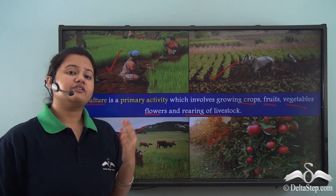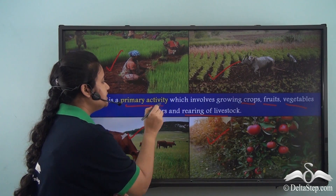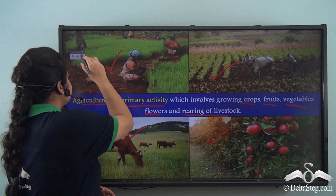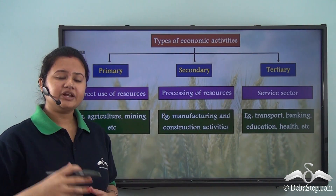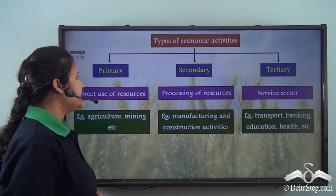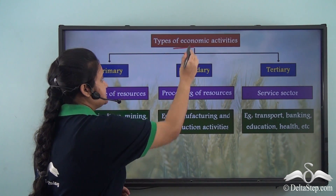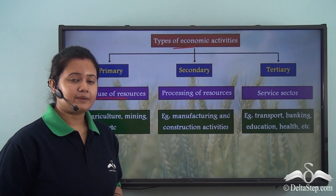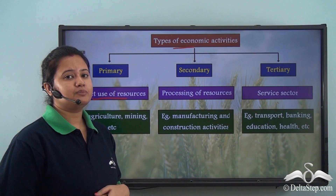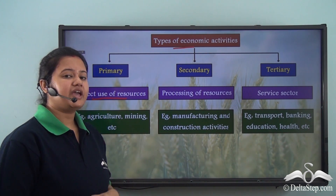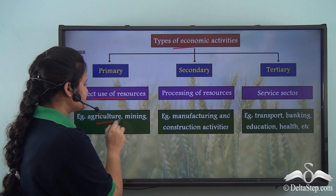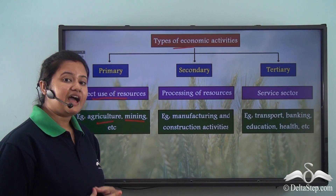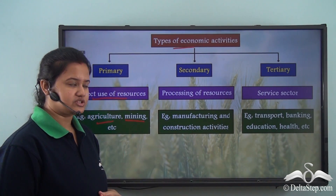Agriculture is a primary activity. A primary activity is an economic activity that involves direct use of resources. Some classic examples of primary activities are agriculture and mining. In both these cases, land as a resource is used.